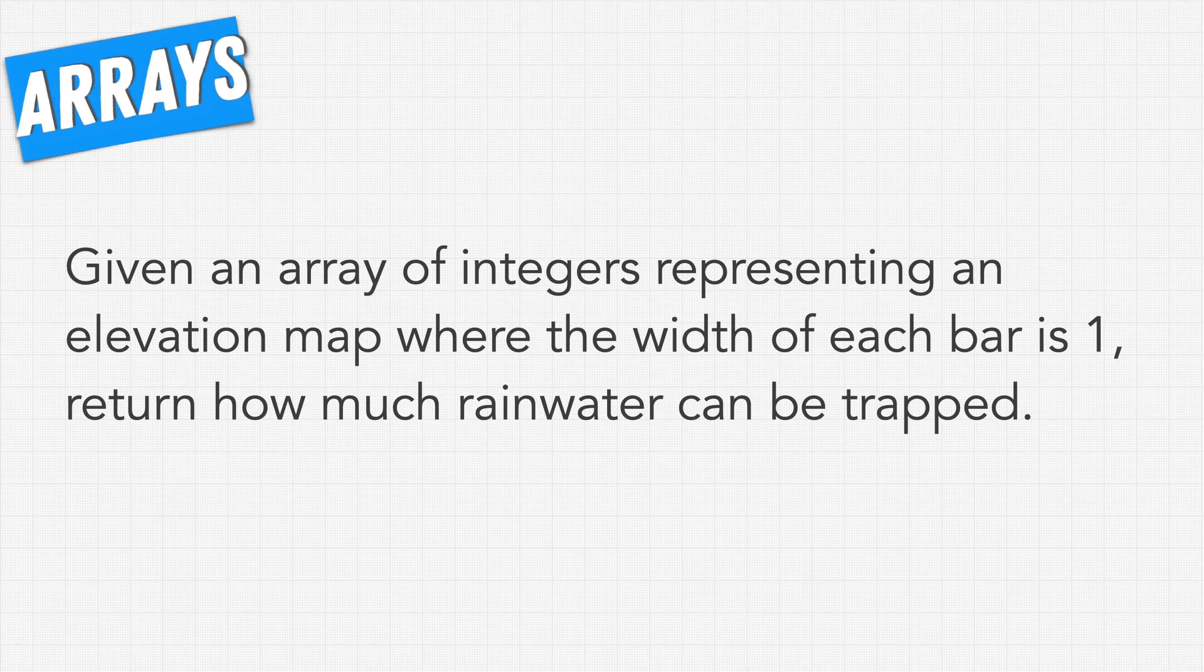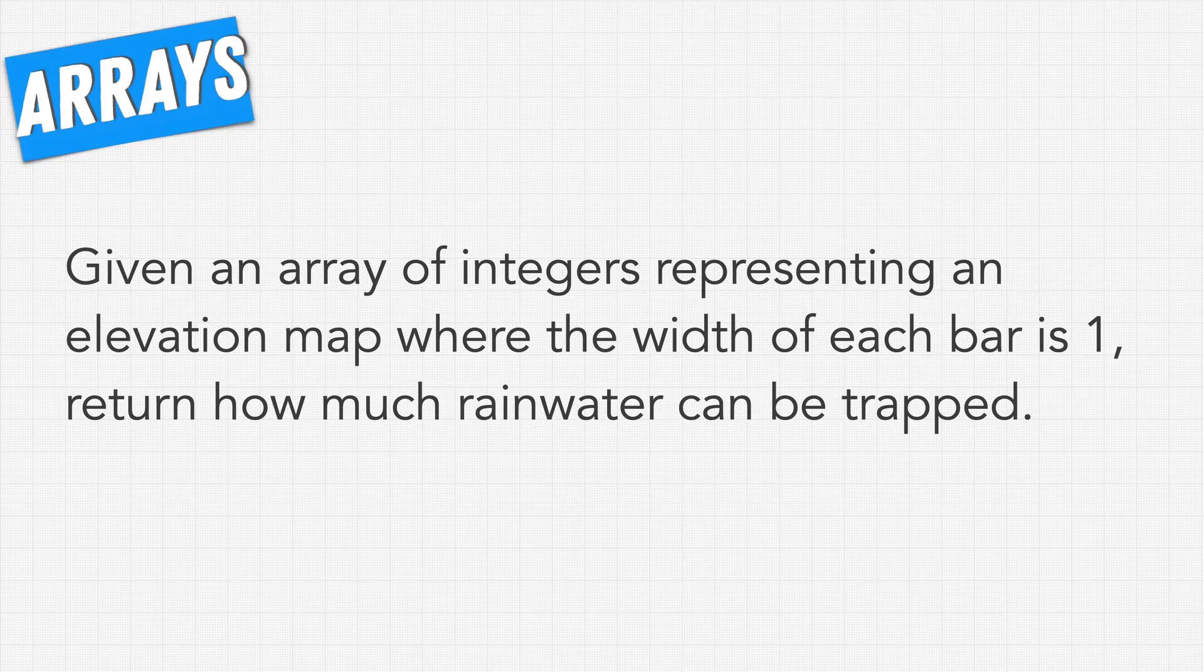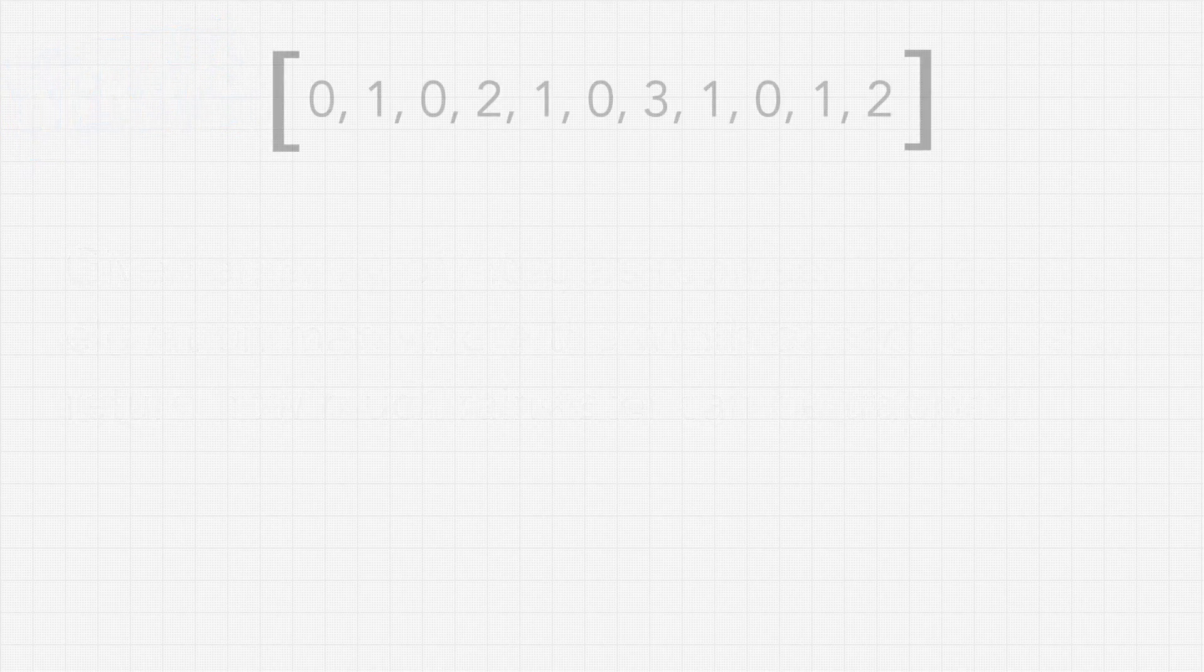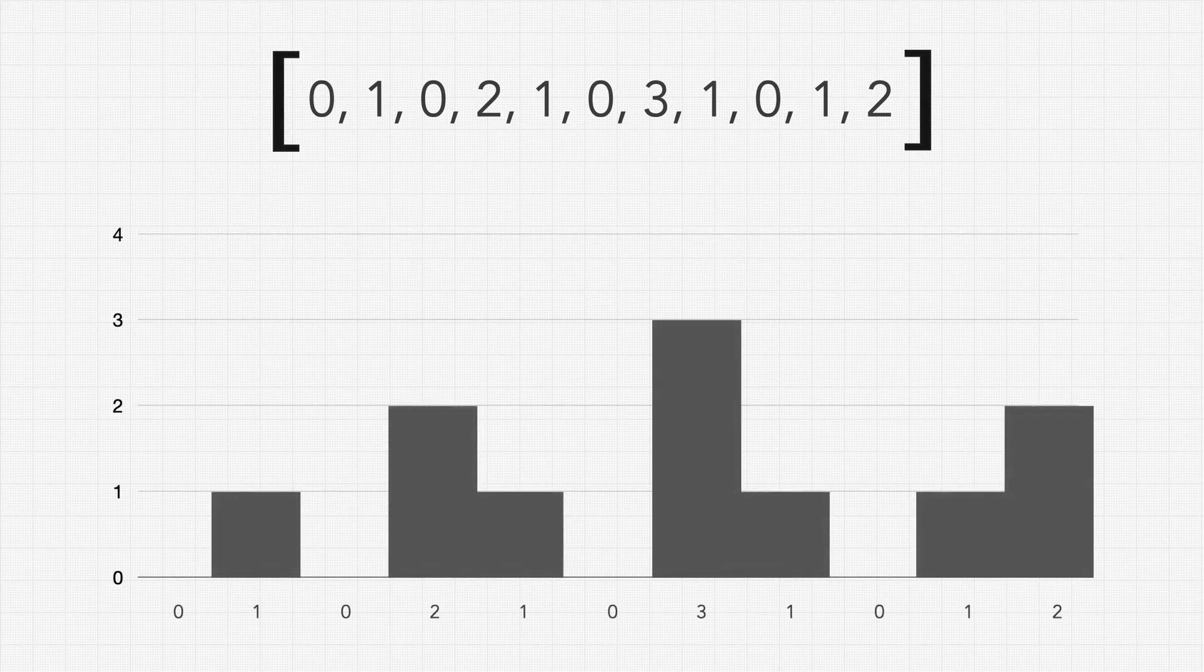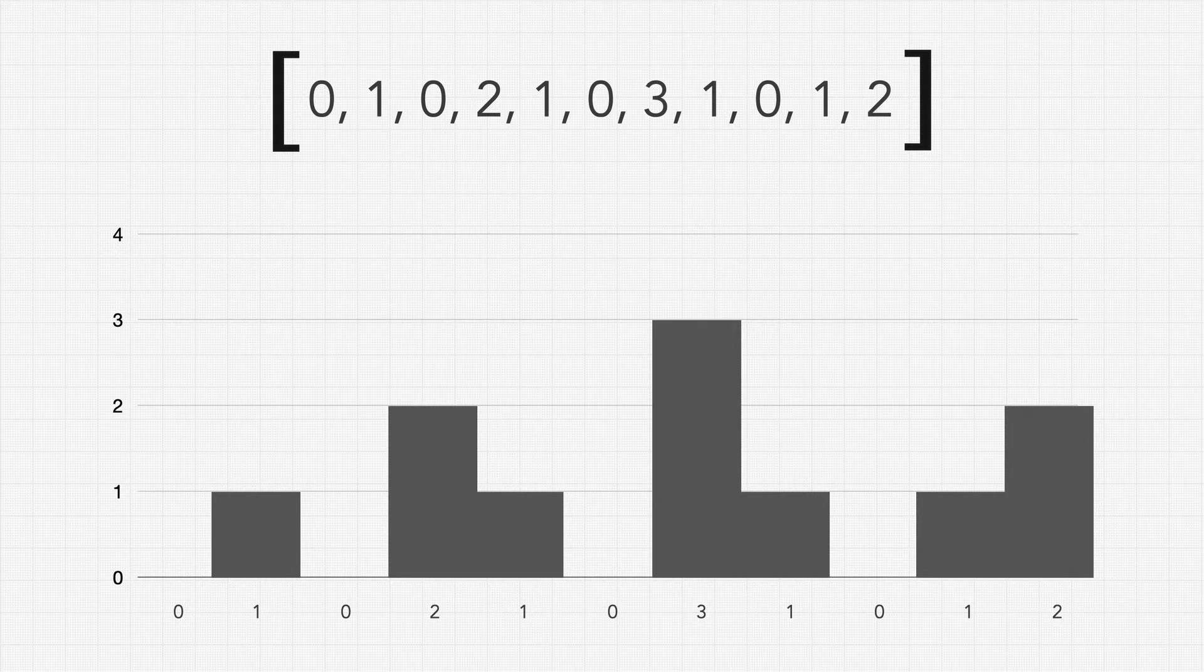So this question asks: given an array of integers representing an elevation map where the width of each bar is one, return how much rainwater can be trapped. Don't let the elevation map term confuse you. This is very similar to our last question. In fact, we'll see it in an example here. Imagine we were given this array, how this looks like is going to map out into this bar chart here, which is very similar if not identical to our previous question.